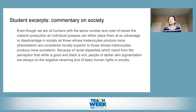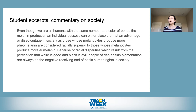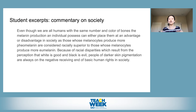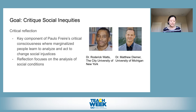I want to share one excerpt from this reflection. A student writes: 'Even though we are all humans with the same number and color of bones, the melanin production an individual possesses can either place them at an advantage or disadvantage in society, as those whose melanocytes produce more pheomelanin are considered racially superior to those who produce more eumelanin.' This student did a great job integrating biological concepts with thoughts on how society treats people of different pigmentation — that it's simply a difference in pheomelanin versus eumelanin that carries these greater societal ramifications.